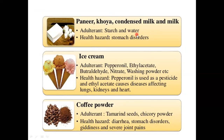In paneer, khova, condensed milk and milk, starch content is used in paneer or khova, while in milk most of the time water is added, causing stomach disorders. In ice cream, pepper, onion and ethyl acetate are used as adulterants for getting specific color, and pepper and onion used as pesticides can cause diseases affecting the lungs, kidneys and heart. In coffee powder, tamarind seed powder and chicory powder are used as adulterants, which create diarrhea, stomach disorders, giddiness and body pain.